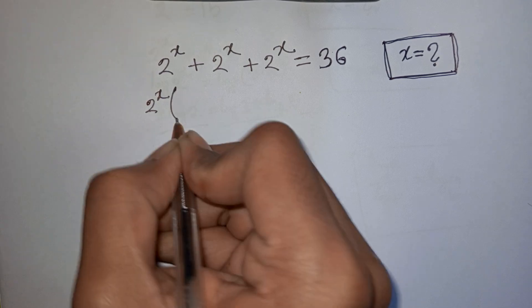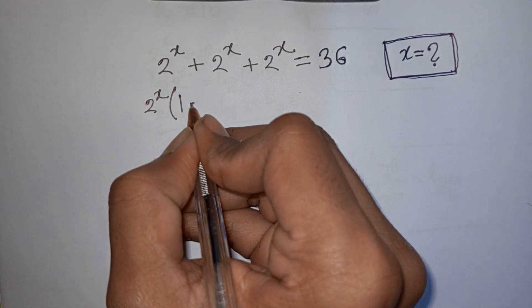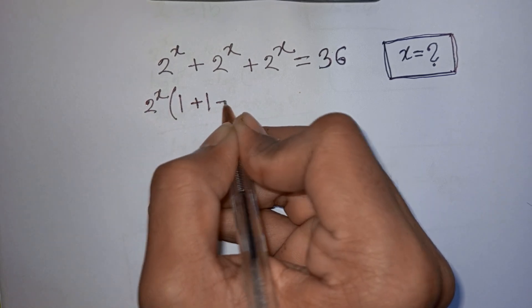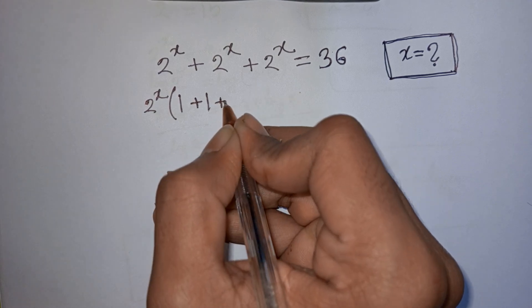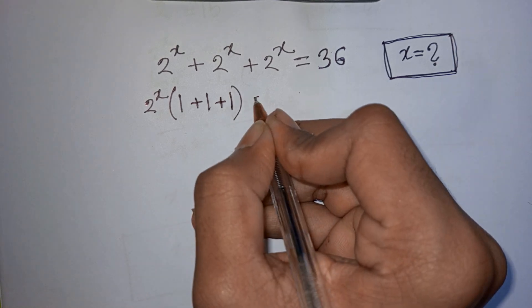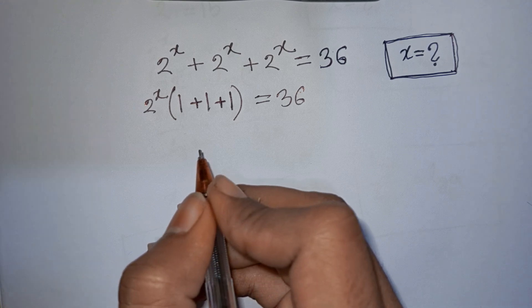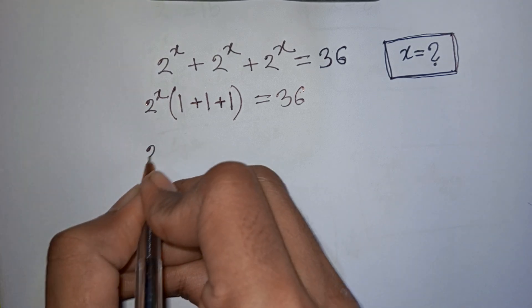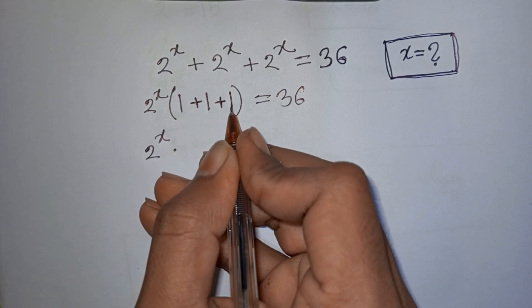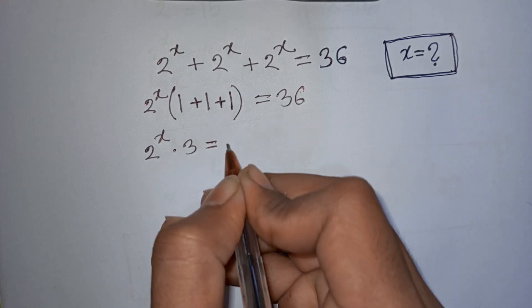So 2 power x is common. We factor it out: 2 power x times 1 plus 1 plus 1, that means it will be 3, is equal to 36.